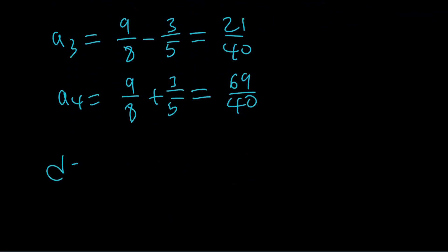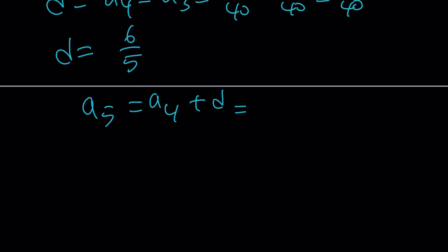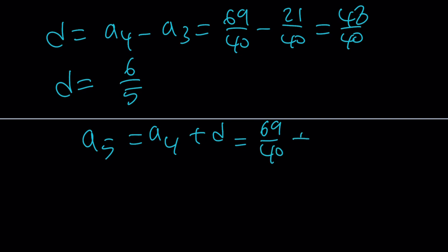And then to find d, I just need to look at this consecutive difference. And that's a sub 4 minus a sub 3, which is 69 over 40 minus 21 over 40, which is 48 over 40. And you can simplify that. So d becomes 6 over 5. And then a sub 5 is just a sub 4 plus d. Remember, we were always adding the common difference. But a sub 4 is 69 over 40. You just have to add 6 over 5 or 48 over 40 to it. And that's going to give you 117 over 40. If you divide, you're going to get something 2.7 something. It's less than 3, greater than 2.